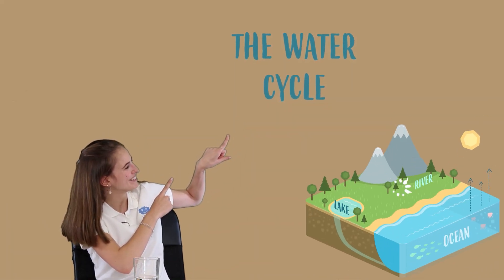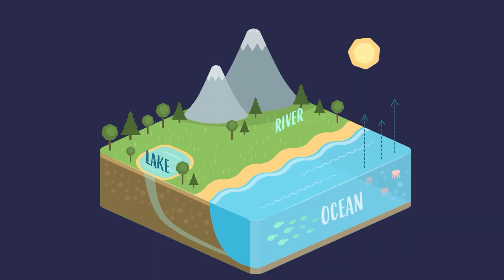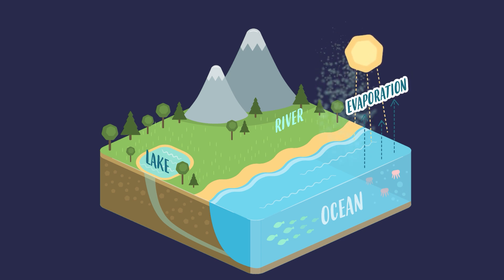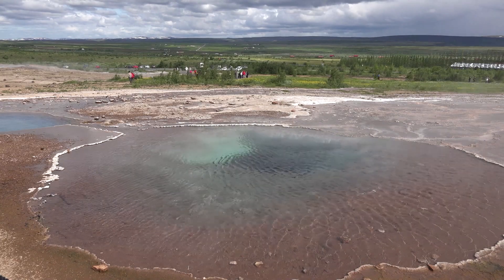So now we've got to know the three forms that water can be in. Now we're going to learn about the water cycle. The water cycle commences with evaporation. The sun heats the water a lot so it changes form — from liquid to gas, to water vapour.